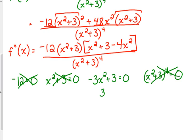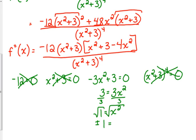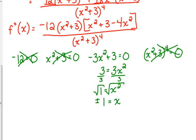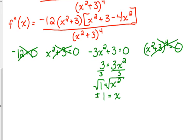Let's check this other one. I'm going to add the 3 to the other side, then divide by 3. So I've got 1 equals x squared. Take the square root — don't forget the positive and the negative. So those are our possible points of inflection: x equals negative 1 and positive 1.